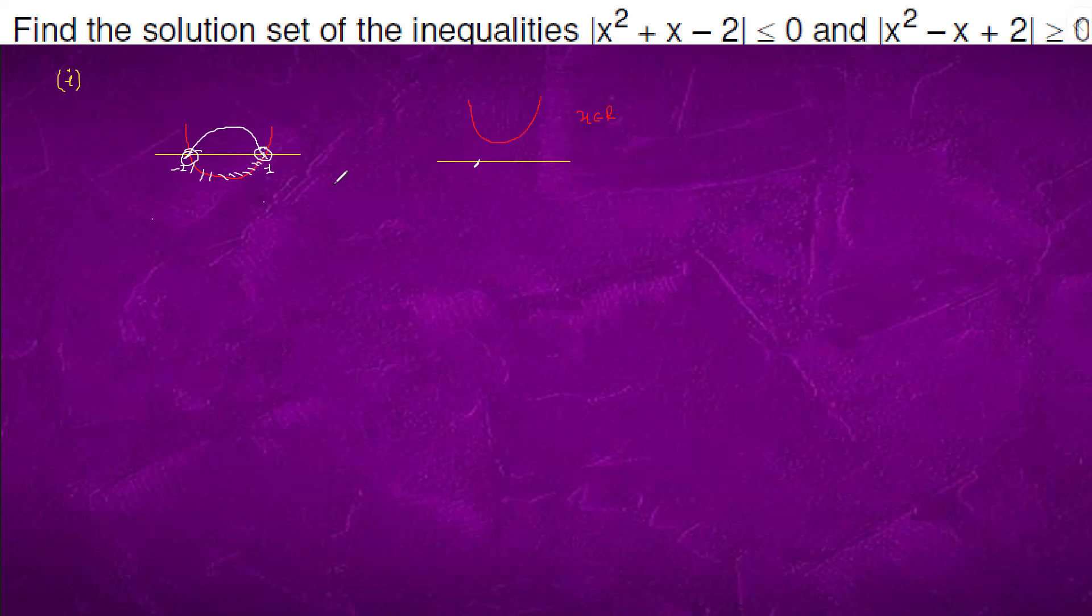So, we have to take intersection of both. So, intersection of both is x belongs to minus 2 and 1. Only two points are valid. This is the solution. Thank you.